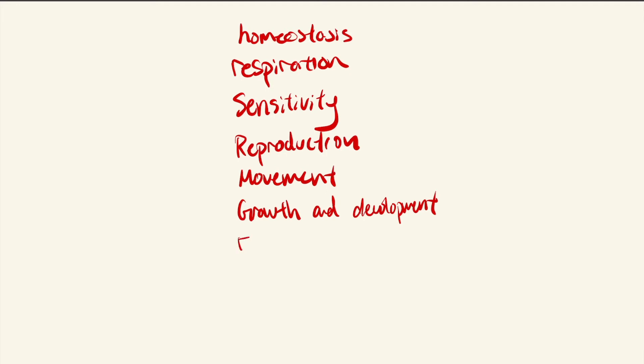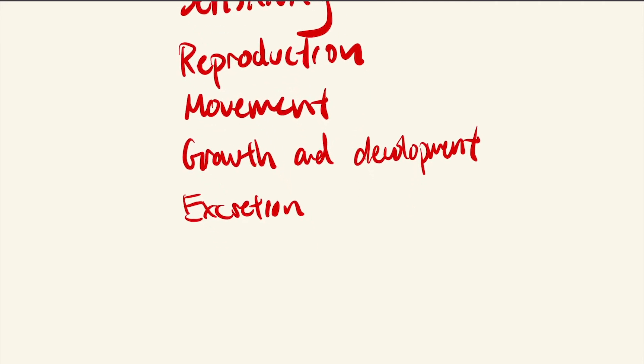After growth and development, there is excretion, and excretion is the process or ability of an organism to remove excess waste from the body, and it can be tied into homeostasis in that they excrete to maintain internal or external homeostasis. And the last one we have is nutrition, and nutrition is the process of taking in food and digesting it to use the nutrients to grow and develop, so it can also be tied into growth and development.